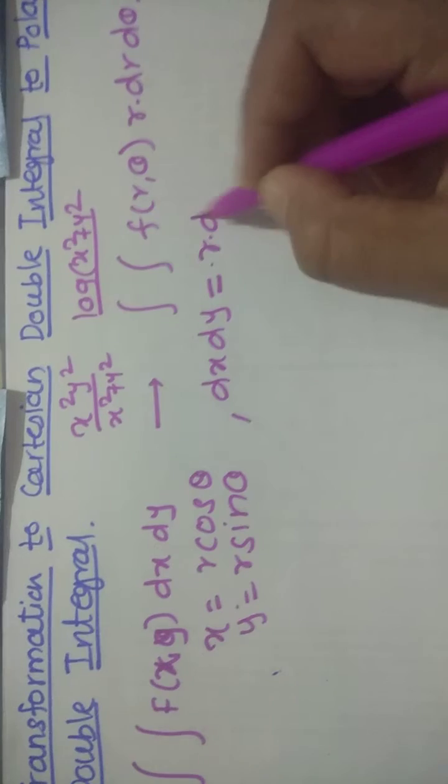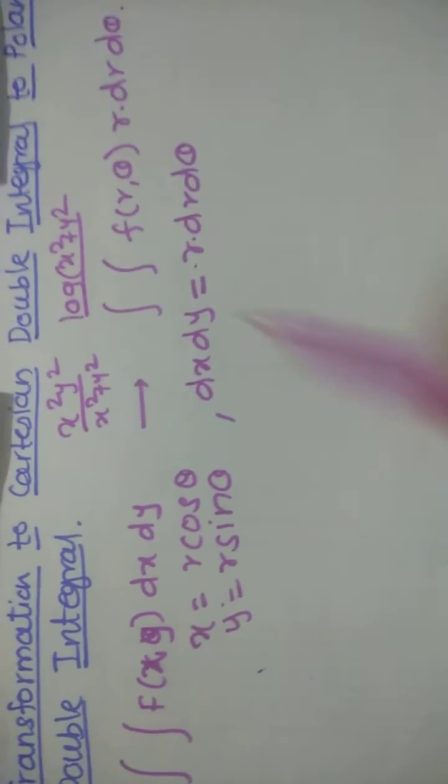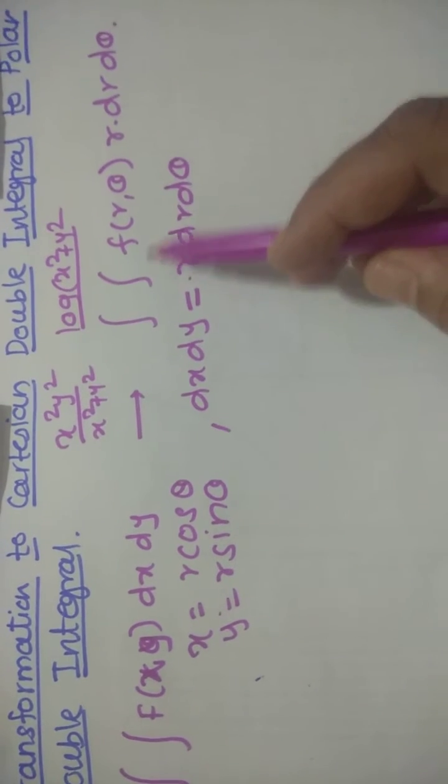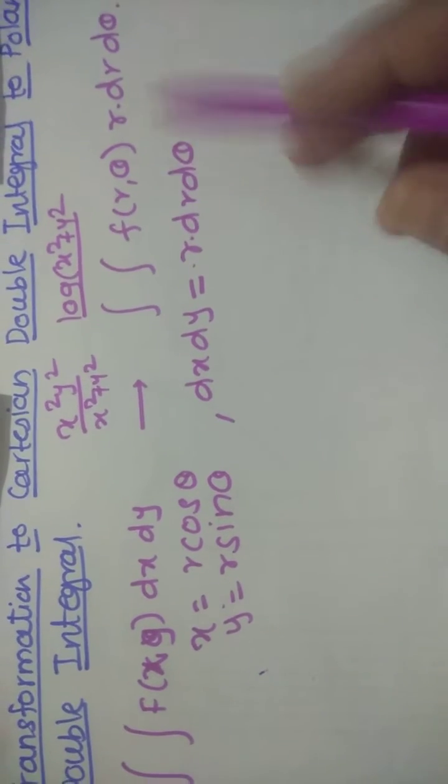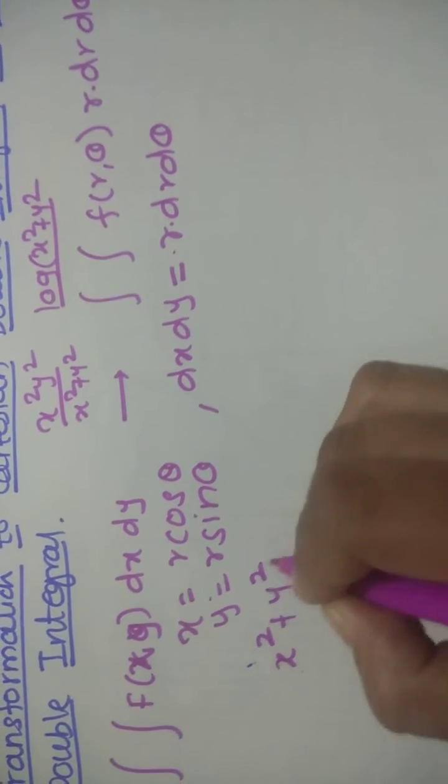So integration f of x, y dx dy is nothing but double integration f of r, theta times r dr d theta. Now suppose we have a circle x squared plus y squared equal to a squared, complete circle.